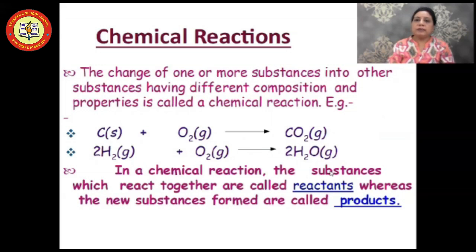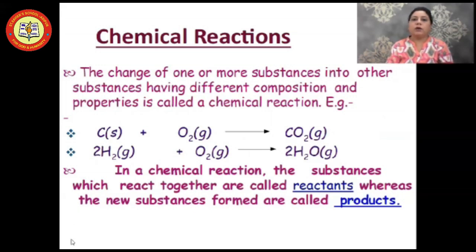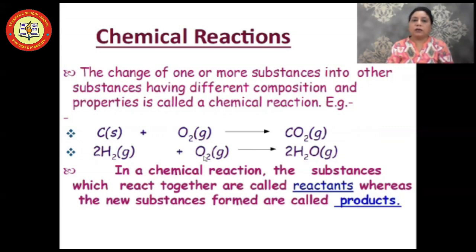In a chemical reaction, the substances which react together are called reactants, whereas the new substances formed during the reaction are known as products. For example, carbon and oxygen are the reactants, whereas carbon dioxide is the product. Similarly, in the second reaction, hydrogen and oxygen are the reactants, and water formed during the reaction is the product.